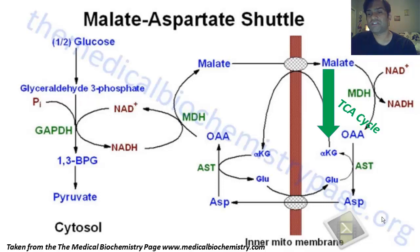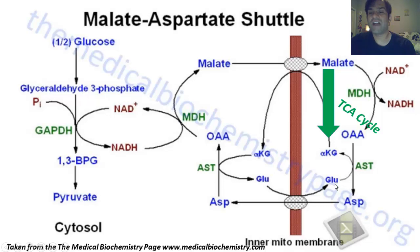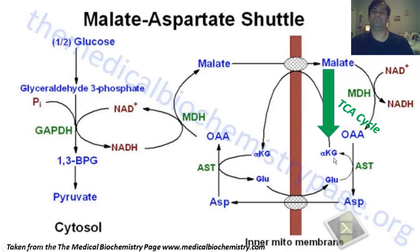In that reaction, glutamate donates its amino group to oxaloacetate. So when glutamate donates its amino group to oxaloacetate, glutamate — by virtue of its donation of its alpha amino group — becomes alpha-ketoglutarate. And oxaloacetate, by virtue of receiving that alpha amino group, becomes the alpha amino acid aspartate.